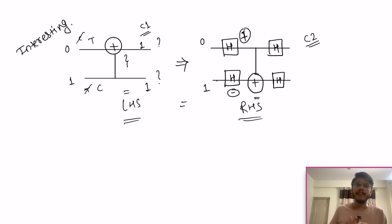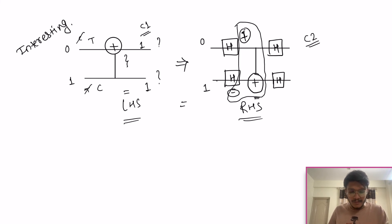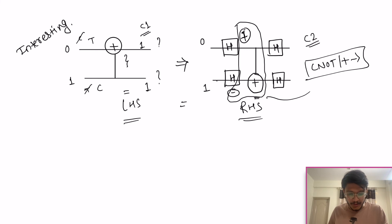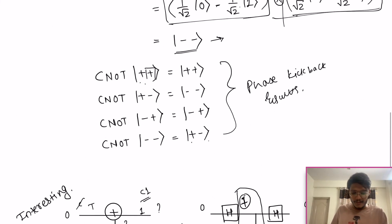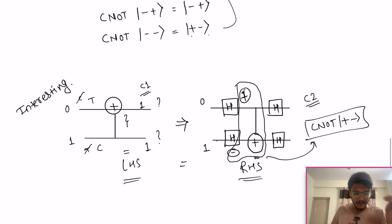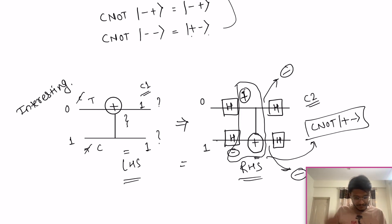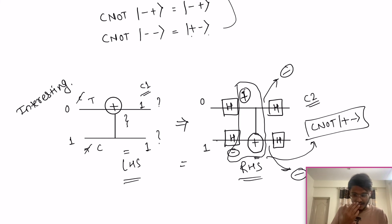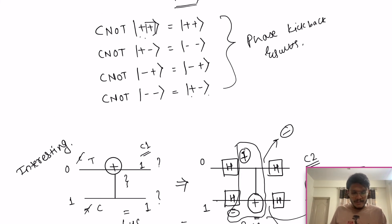Since your states are now in equal superposition states, the state here is |+⟩|−⟩ and you are applying CNOT on it. We already know the result: CNOT of |+⟩|−⟩ is |−⟩|−⟩. So up to this point it gets changed to minus and minus because phase kickback happened here — your control bit was |+⟩ and your target bit was |−⟩, and after applying CNOT it becomes |−⟩|−⟩.